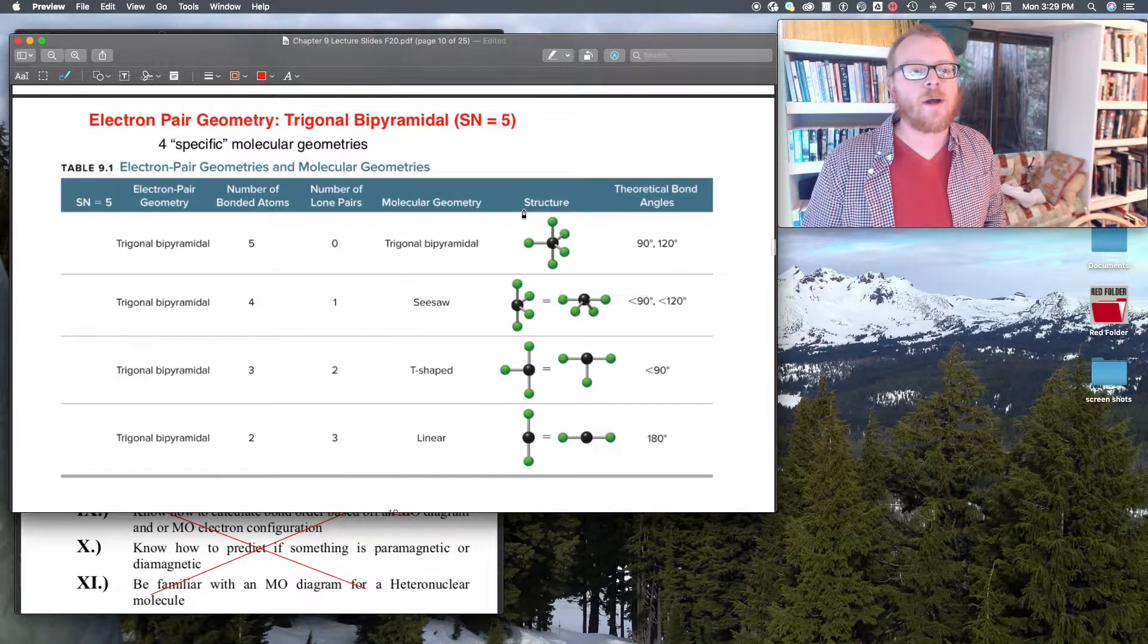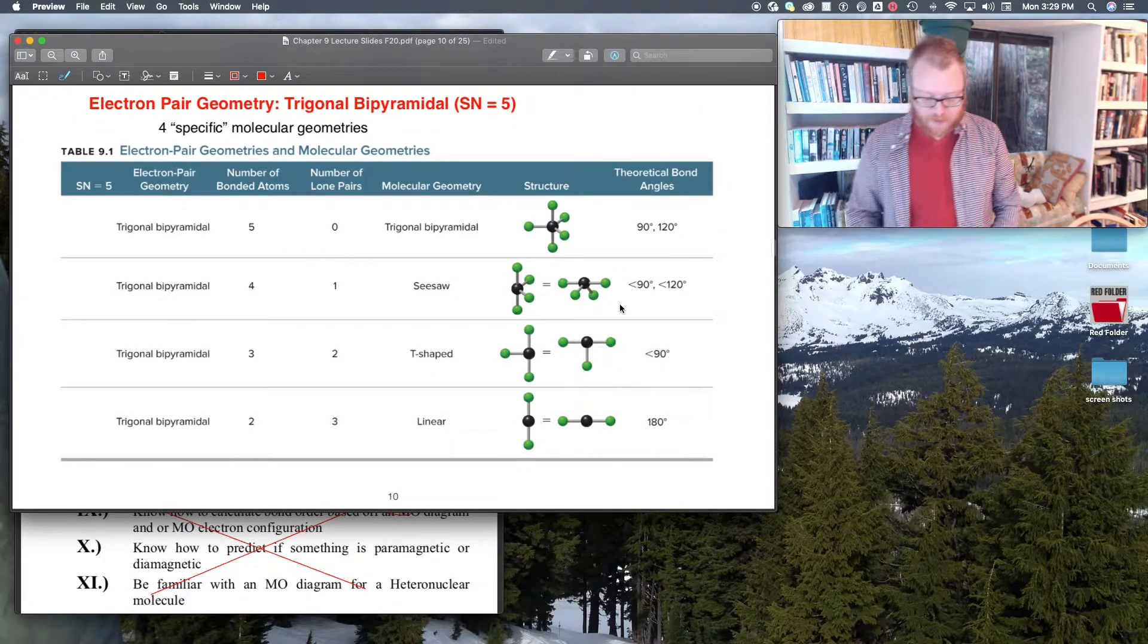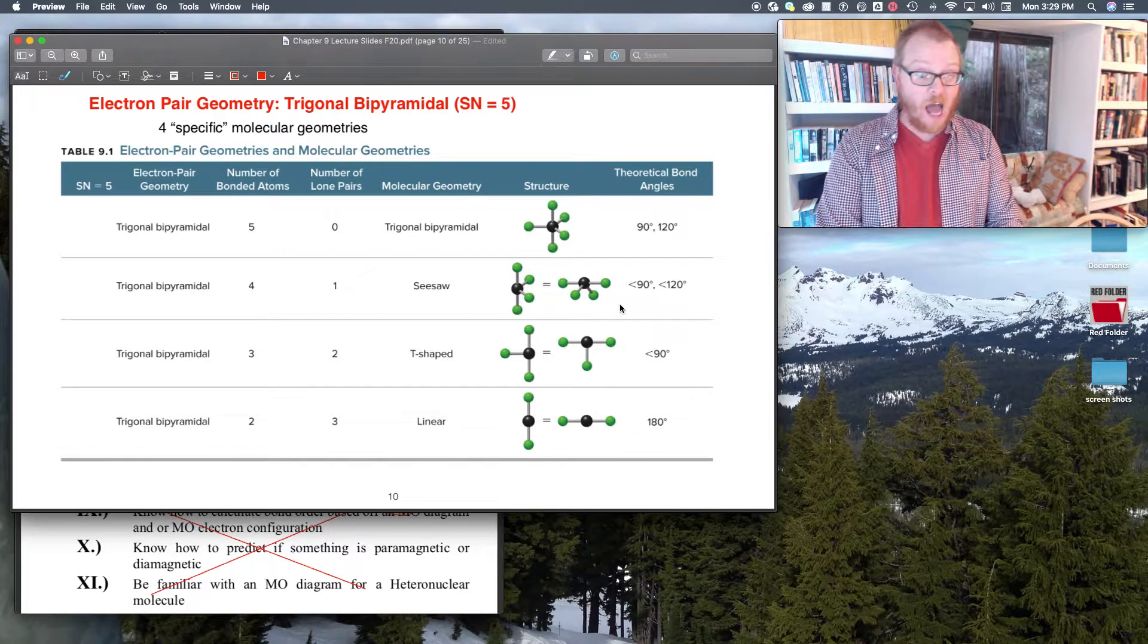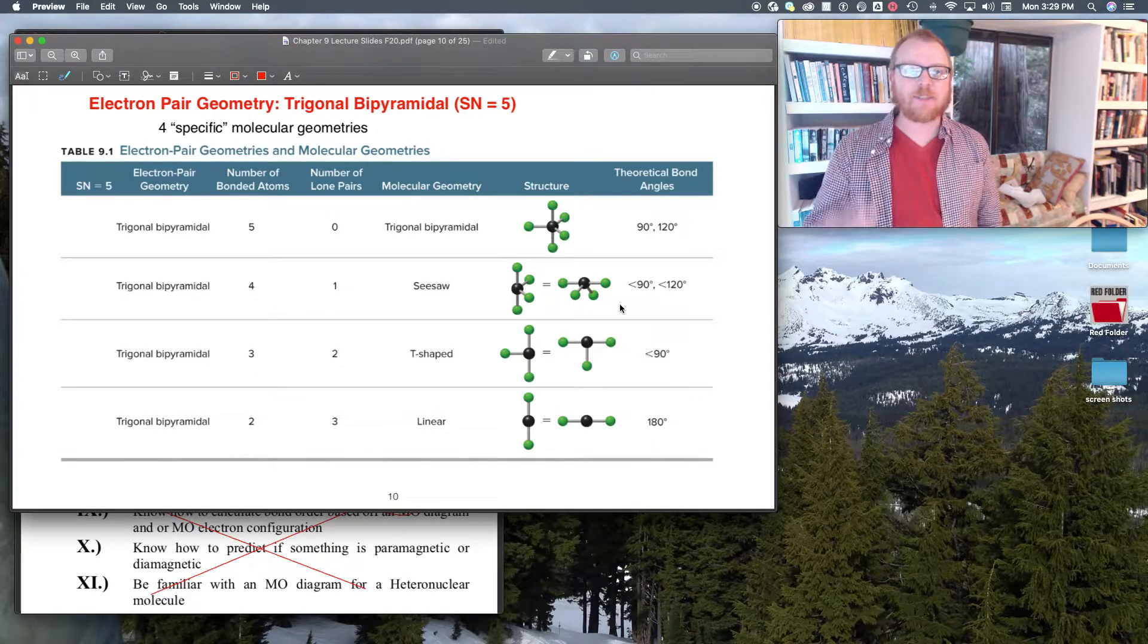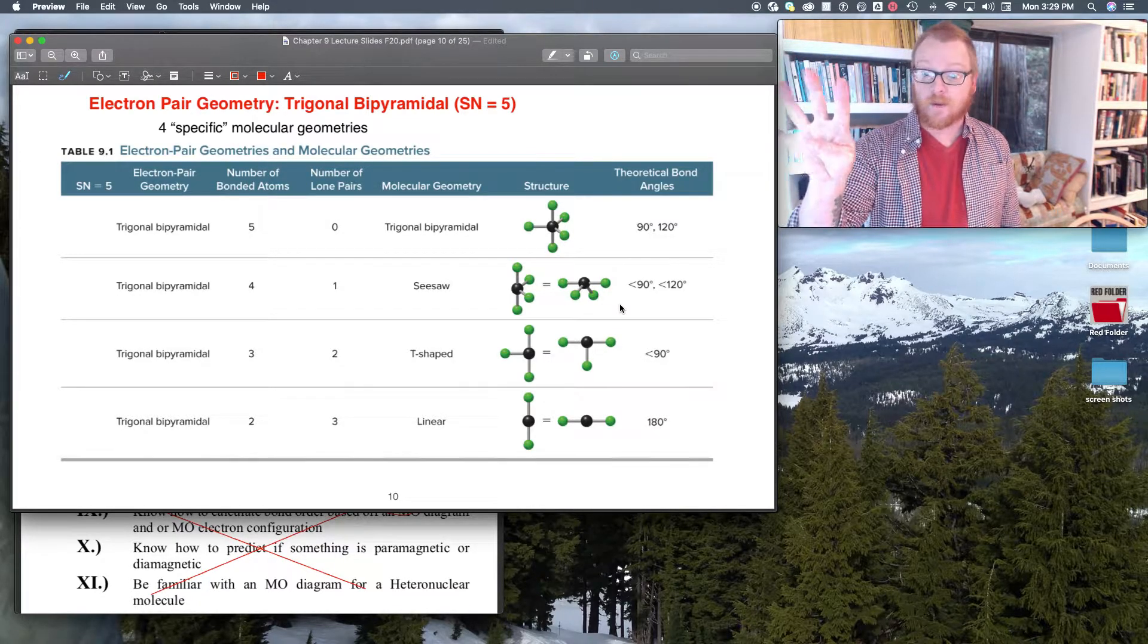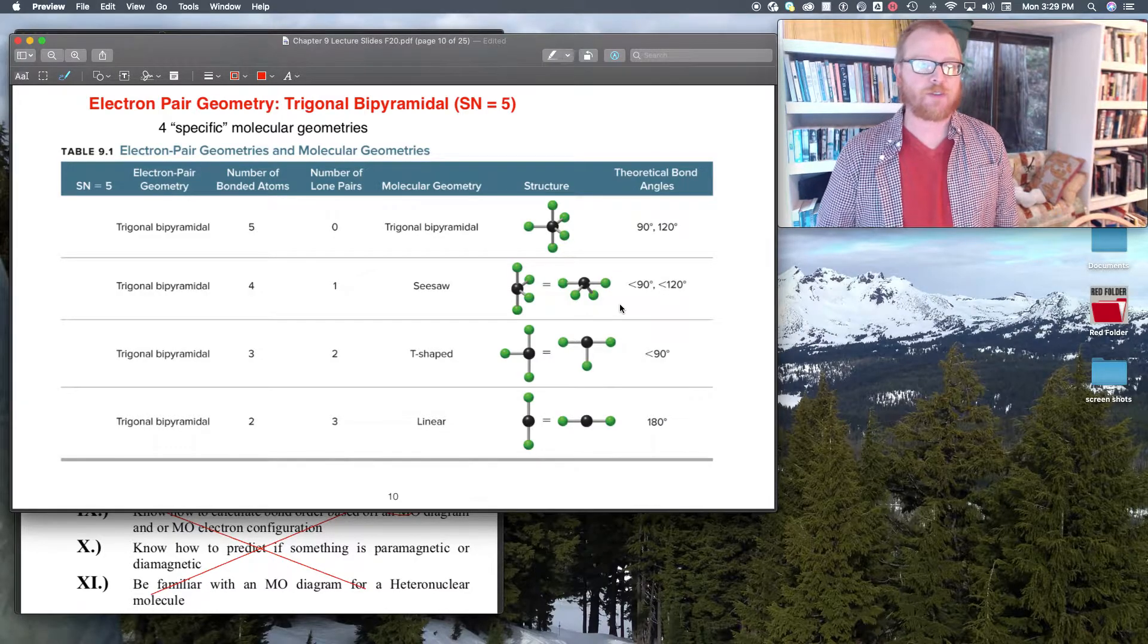So now because this is getting to be a lot, I'm just going to summarize this all in one slide. As you might guess, because there's a steric number of five, that gives us four specific geometries.